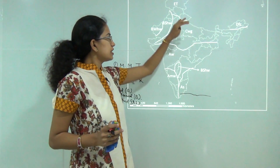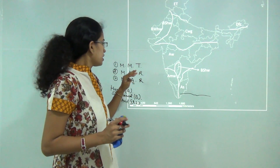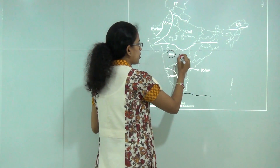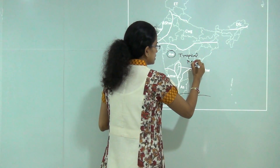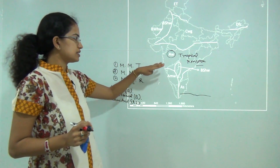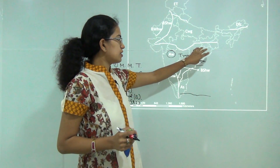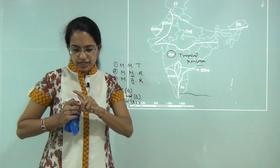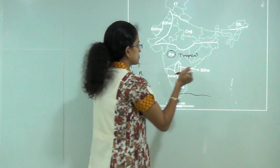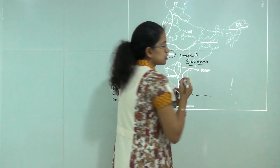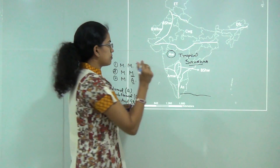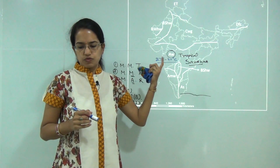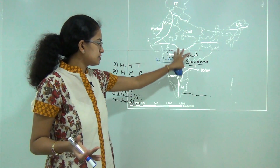Based on that, he divided India into various regions. The first region is AW, that's the tropical savannah region, which covers most of Maharashtra, Karnataka, Tamil Nadu, parts of Andhra Pradesh, Jharkhand, Chhattisgarh, and southern Gujarat. The temperature here varies from 27 to 40 degrees Celsius, with rainfall usually brought by southwest monsoons and dry winters.